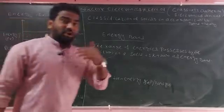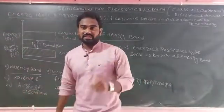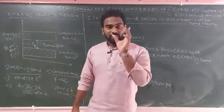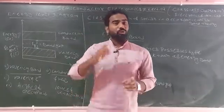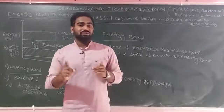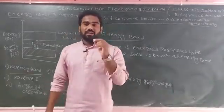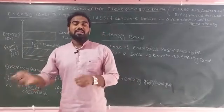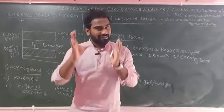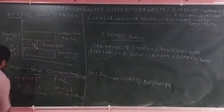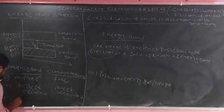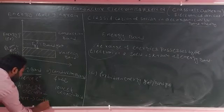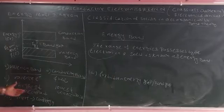In the case of inert gases — helium, neon, argon, krypton — the outermost valence electrons are completely filled. For example, helium, neon, argon have configurations like 2, 8, 8. That means for inert gases the outermost shell is completely filled. In the case of inert gases, the valence band is completely filled.